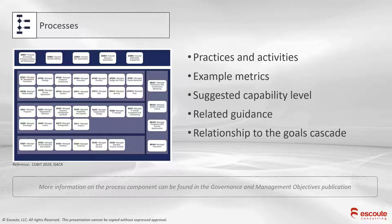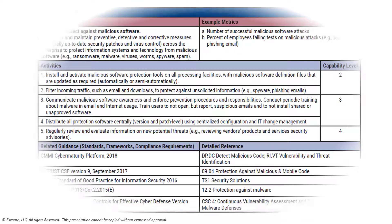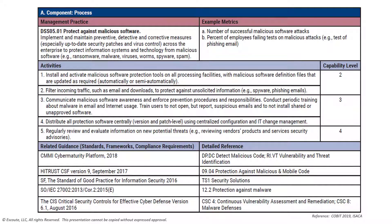Now let's take a quick look at one of the governance and management objectives from the process component view. We'll pick DSS-05, which is Managed Security Services. This information is coming from the COBIT Governance and Management Objectives publication. I'll do a complete end-to-end view of all these components from this guide in module nine, where I do the COBIT demonstration on components. Here is an example of DSS-05 from the process component level.